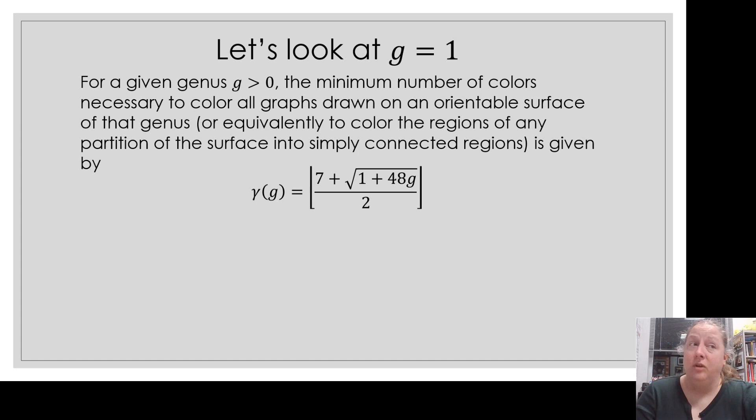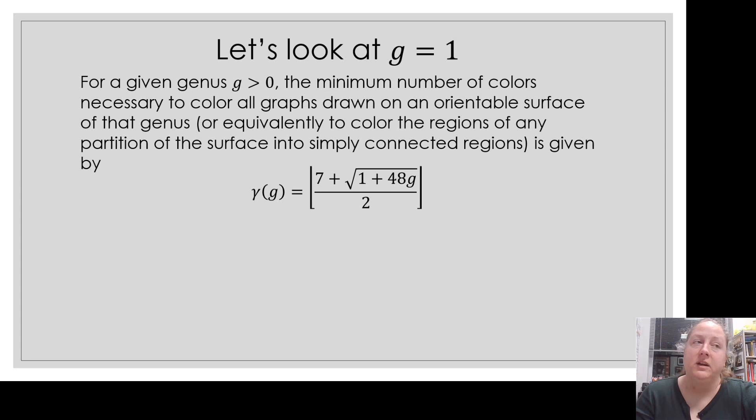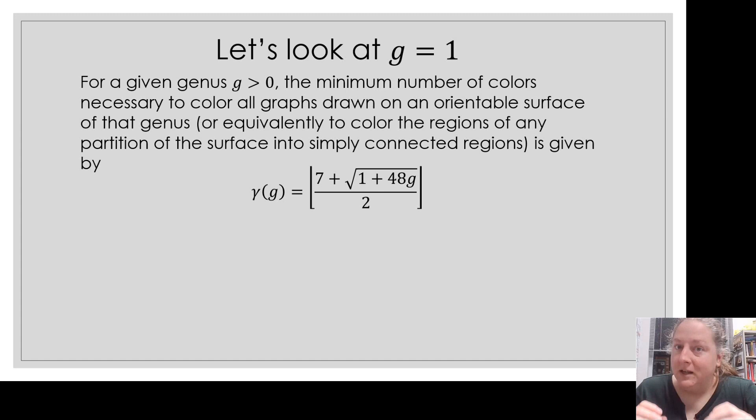So that's my challenge for you — see if you can come up with a design on the surface of a donut where you truly need all seven colors. It's basically the equivalent, going back to our warm-up problem, of having seven sons living on a donut, and they have to divide the land so that each of them is neighbors with all of the other sons. How can they all share borders? Good luck in trying that — I look forward to seeing what your solutions are. Thank you.